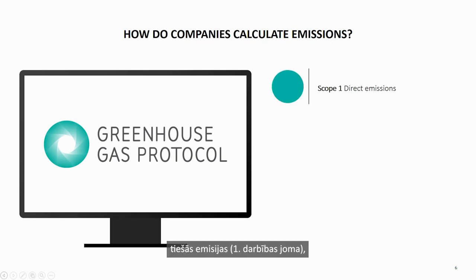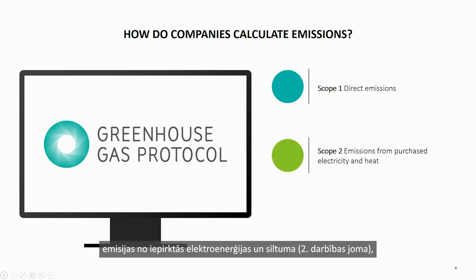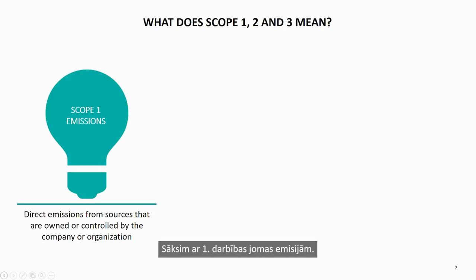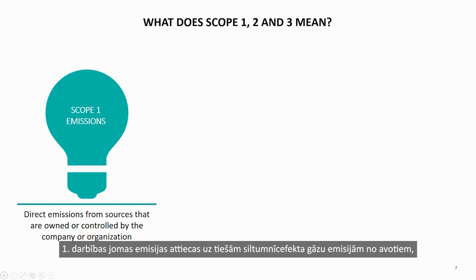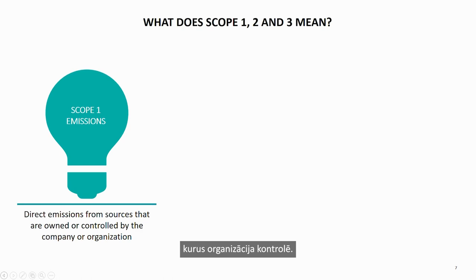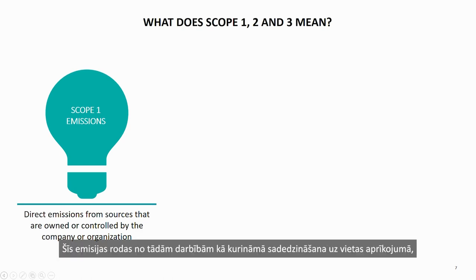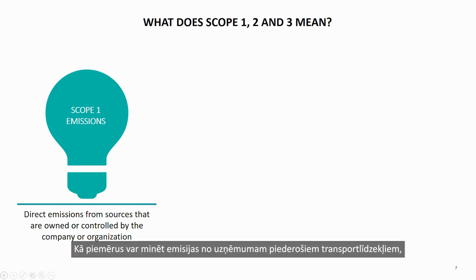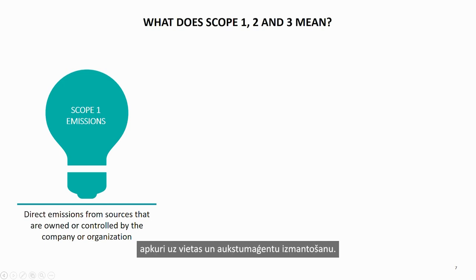The three scopes are: direct emissions or Scope 1, emissions from purchased electricity and heat or Scope 2, and other indirect emissions or Scope 3. Scope 1 emissions refer to direct greenhouse gas emissions from sources that the organization has operational control over, generated from activities such as combustion of fuels in on-site equipment, vehicles, and industrial processes. Examples include emissions from company-owned vehicles, on-site heating, and use of refrigerants.